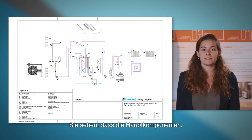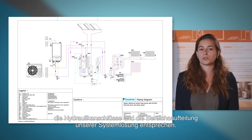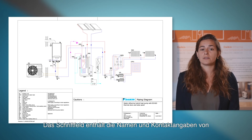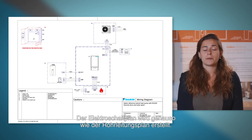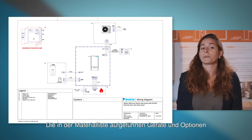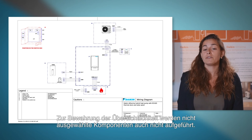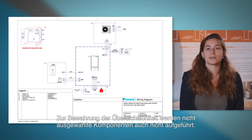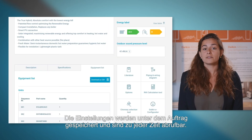Here you can see that the main components, hydraulic connections and zoning are adapted according to the system solution. The title block contains the installer and customer's name and contact information. The wiring diagram follows the same procedure as the piping. The units and options which are part of the equipment list are generated and included onto the diagram. If an item is not selected, it is not shown to reduce any unnecessary confusion. You can download and print for use on site. The settings are stored and can be consulted at any time.